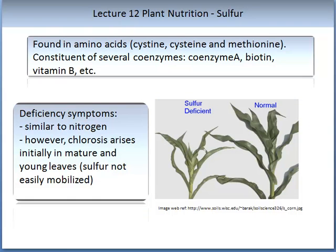Sulfur is a compound found in amino acids such as cysteine and methionine. It is a constituent of several coenzymes, particularly coenzyme A, biotin, and vitamins. Sulfur deficiency is very similar to nitrogen deficiency; however, the difference is that chlorosis occurs initially in mature and young leaves. This is because sulfur is not easily mobilised, whereas nitrogen is.